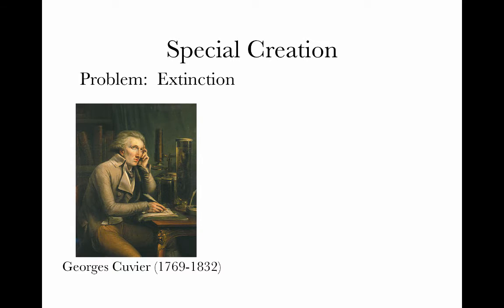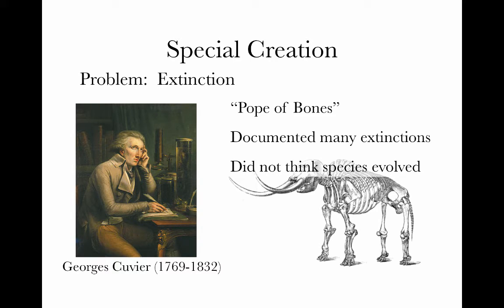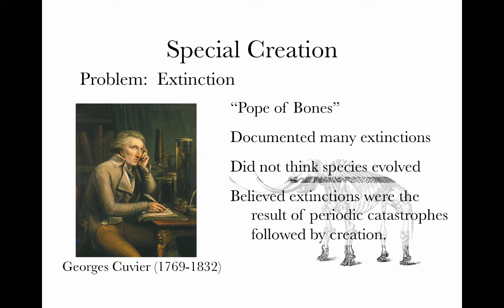So as people mined, they found organisms that no longer existed, for which there was a bone, but it clearly looked like nothing that anyone had ever observed alive. And a French scientist, Georges Cuvier, became the Pope of Bones at the museum in Paris, where one of the large collections of them accumulated. He documented a number of extinctions, both in mastodons and mammoths, but in other species. He did not think that species evolved. He believed in special creation, but he believed that extinctions were the result of periodic catastrophes, followed by new creations.